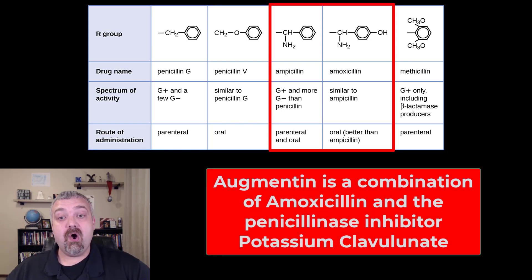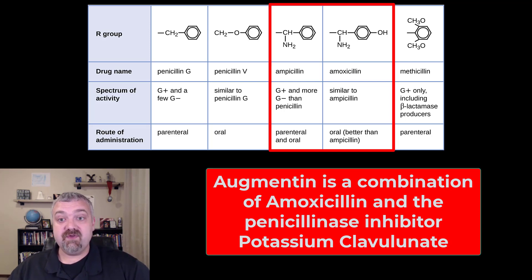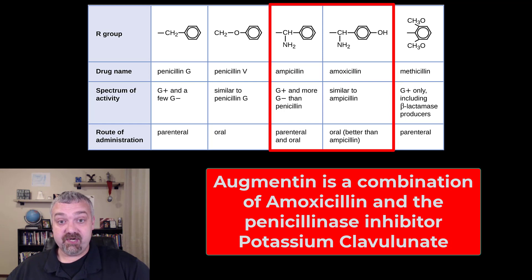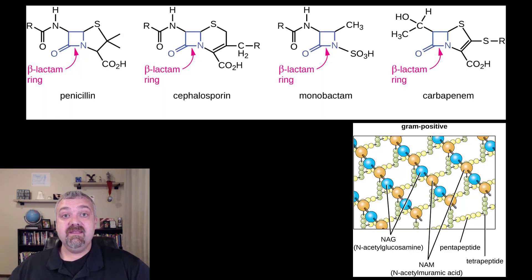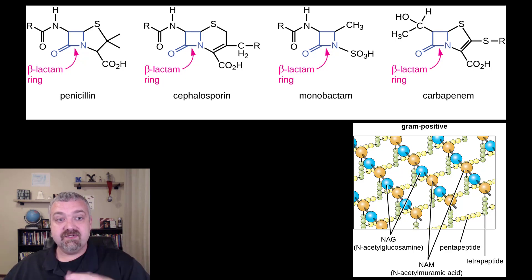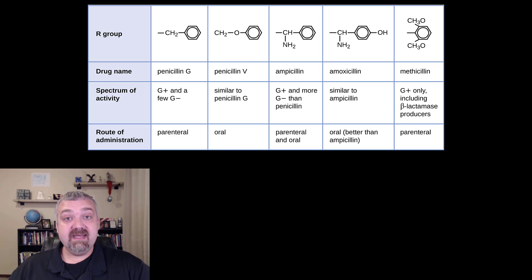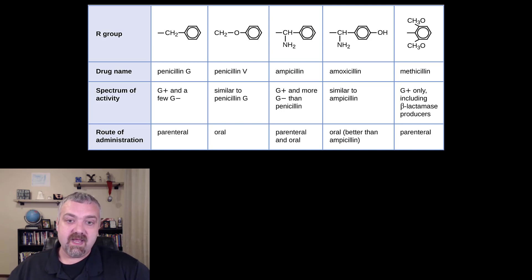I want to mention one more that's not shown here: augmentin. If you take amoxicillin and add one more compound — potassium clavulanate, also called clavulanic acid — what that does is act as a penicillinase inhibitor. We mentioned that penicillinases or beta-lactamases are enzymes some bacteria develop — think of them as molecular scissors that chop the beta-lactam ring. Our solution was to create antibiotics that are penicillinase resistant. I would say augmentin is really the top-of-the-line cell wall inhibitor.